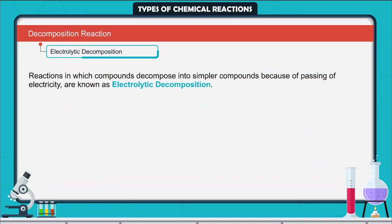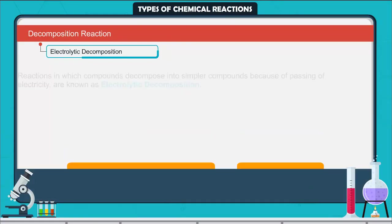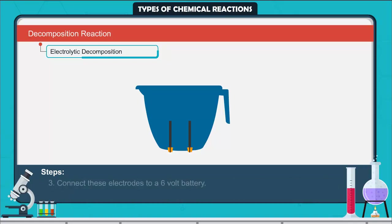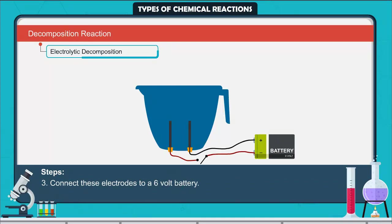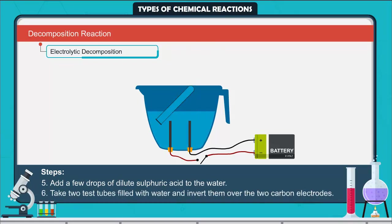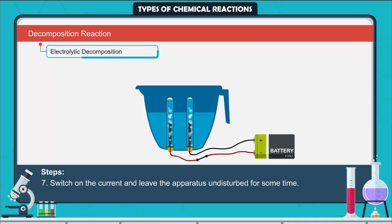Electrolytic decomposition. Reactions in which compounds decompose into simpler compounds because of the passing of electricity are known as electrolytic decomposition, also called electrolysis. Activity: Take a plastic mug and drill two holes at its base and fit rubber stoppers. Insert carbon electrodes in these rubber stoppers and connect them to a 6-volt battery. Fill the mug with water so the electrodes are immersed. Add a few drops of dilute sulfuric acid to the water. Take two test tubes filled with water and invert them over the two carbon electrodes. Switch on the current and leave undisturbed. You will observe the formation of bubbles at both electrodes.